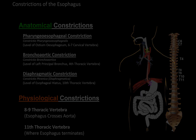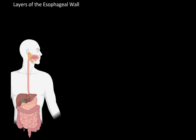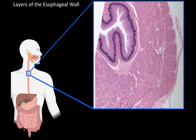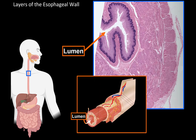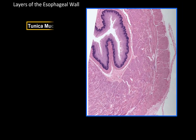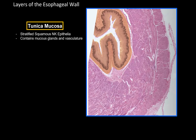Now let's look at the layers of the esophagus on a histology slide. The lumen is on the inner side of the tube. The first layer is the tunica mucosa, which is a layer of stratified squamous non-keratinized epithelium. Right under the epithelium are mucosal glands to lubricate the surface, as well as blood vessels, nerves, and lymphoid nodules — collectively called vasculature — all supported by a lamina muscularis mucosae.